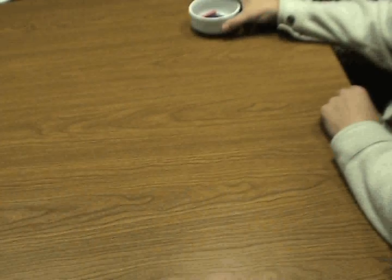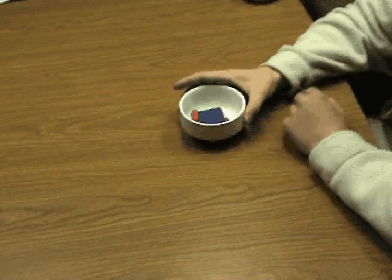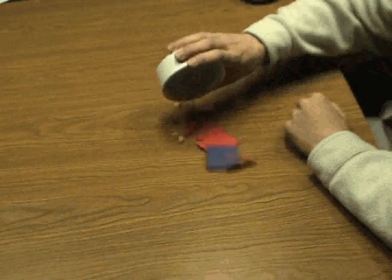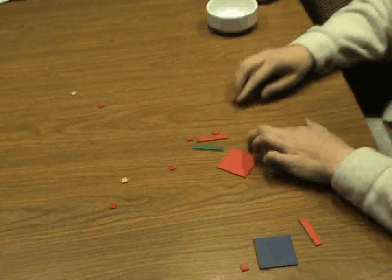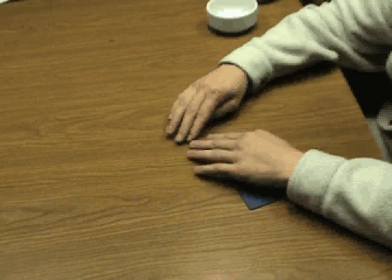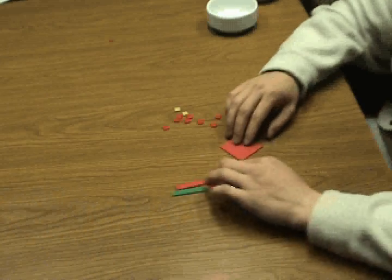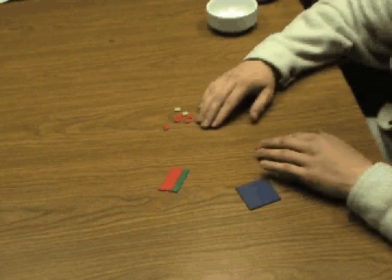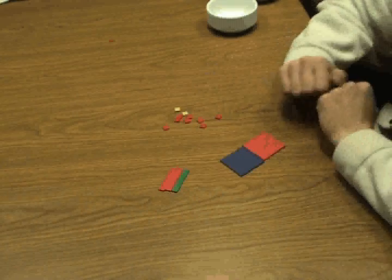The teacher places algebra tiles in a cup and dumps them onto the table or overhead. The student is then asked to sort the tiles. Depending on how the student has sorted the tiles, you can introduce the concepts of like terms and positive and negative values.